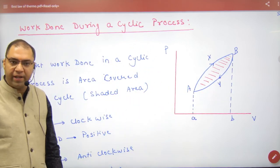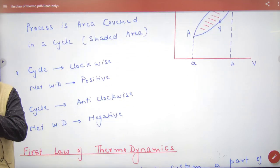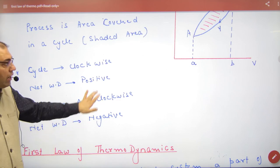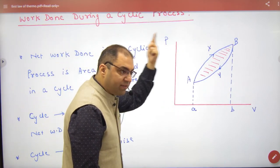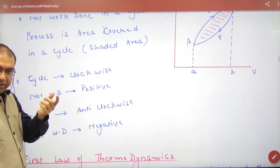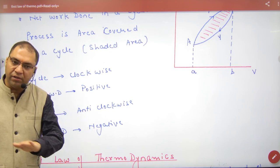Expansion is bigger and compression is smaller. One result to remember: when you have a numerical and you have a cycle, if your cycle is clockwise, then the net amount of work done will be positive, and if it is anti-clockwise, then the net amount of work done will be negative.